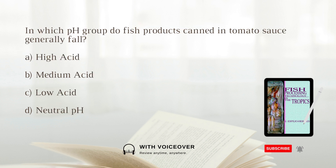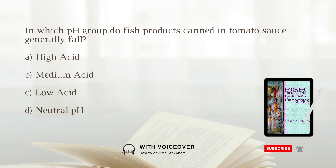In which pH group do fish products canned in tomato sauce generally fall? A. High-acid. B. Medium-acid. C. Low-acid. D. Neutral pH. Answer: B. Medium-acid. Fish products canned in tomato sauce fall into the medium-acid pH group, requiring full sterilization, often to destroy Clostridium botulinum spores.